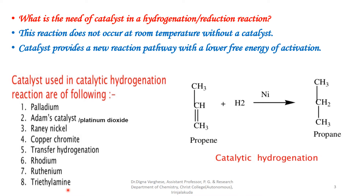Here you can see an example of a catalytic hydrogenation reaction. Propene reacts with hydrogen in the presence of nickel catalyst giving propane. After the hydrogenation reaction, the unsaturated compound is converted into a saturated compound.